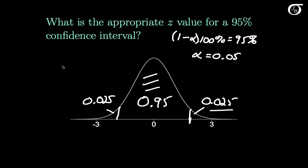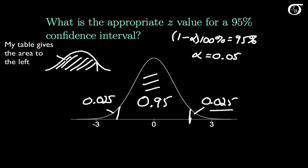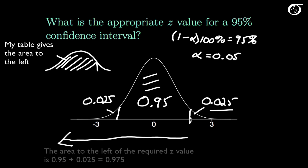We have to remember that the standard normal table I use gives the area to the left. So when we go to the table, we need to look up the area to the left of the value we need, which is 0.975.